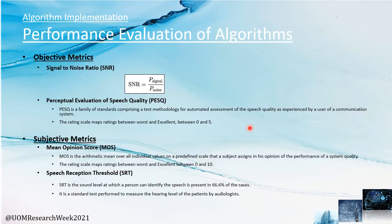For the performance evaluation of the algorithm, we have used two objective metrics — SNR and PESQ — and two subjective metrics — MOS and SRT. SNR is the ratio of signal power to noise power. PESQ is a test similar to MOS with a rating scale from bad to excellent between 0 and 5. MOS is the arithmetic mean over individual values to obtain an opinion on system quality, with a rating scale from worst to excellent from 0 to 10. SRT is the sound level at which a person can identify speech in 66.6% of cases, and is a standard test performed by audiologists to measure the hearing level of patients.